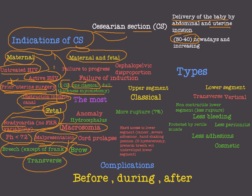To remember the fetal indications, divide them into: fetal distress — which is bradycardia and pH below 7.2; problems with presentation — malpresentation such as breech and transverse, and cord prolapse; and problems with the size of the baby — macrosomia and anomalies like hydrocephalus.